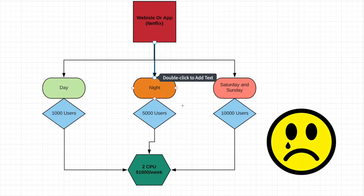Let me give you an example. As you can see in this picture, let's suppose there is a website or an app — we're taking Netflix as an example. Netflix provides web series and videos on its app. Let's suppose Netflix has 1,000 users coming in the daytime because people are busy in their offices. But at night, Netflix gets 5,000 users, and on Saturday and Sunday they get even more users because people are free and have a lot of time to watch videos.